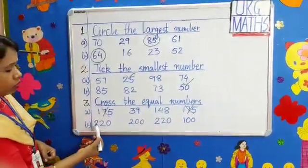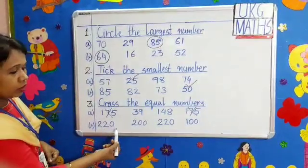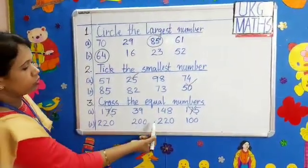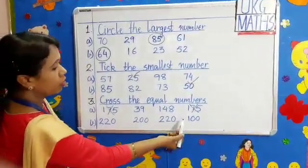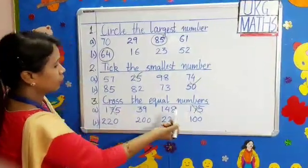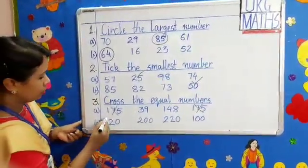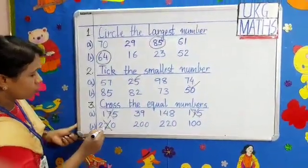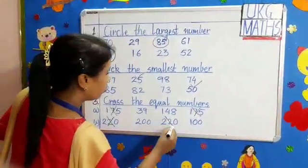Question B: 220, 200, 220, 100. Cross the equal numbers. Yes, we will cross both 220, 220.